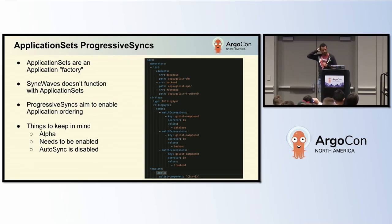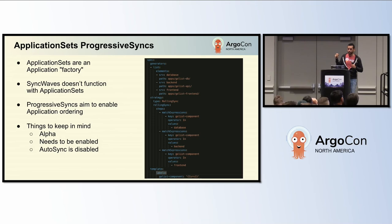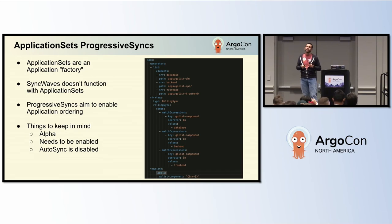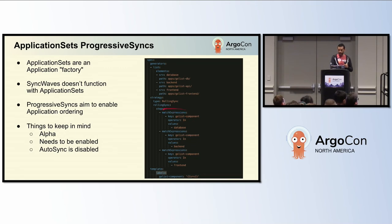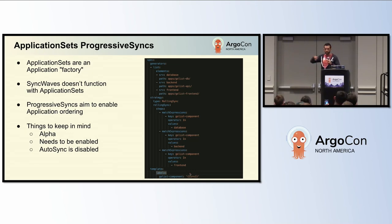Starting maybe six to eight months ago, progressive syncs were added to the application set — meaning that in the application set, you can now set up a strategy to deploy applications in a certain order. In the YAML here, I have three elements: database, backend, and frontend, similar to the other example. Using a rolling sync, anything matching 'database' rolls out first, then it goes to the second step and rolls out anything matching 'backend,' and finally the frontend — all based on labels. The application set controller looks for these labels and deploys your applications accordingly.